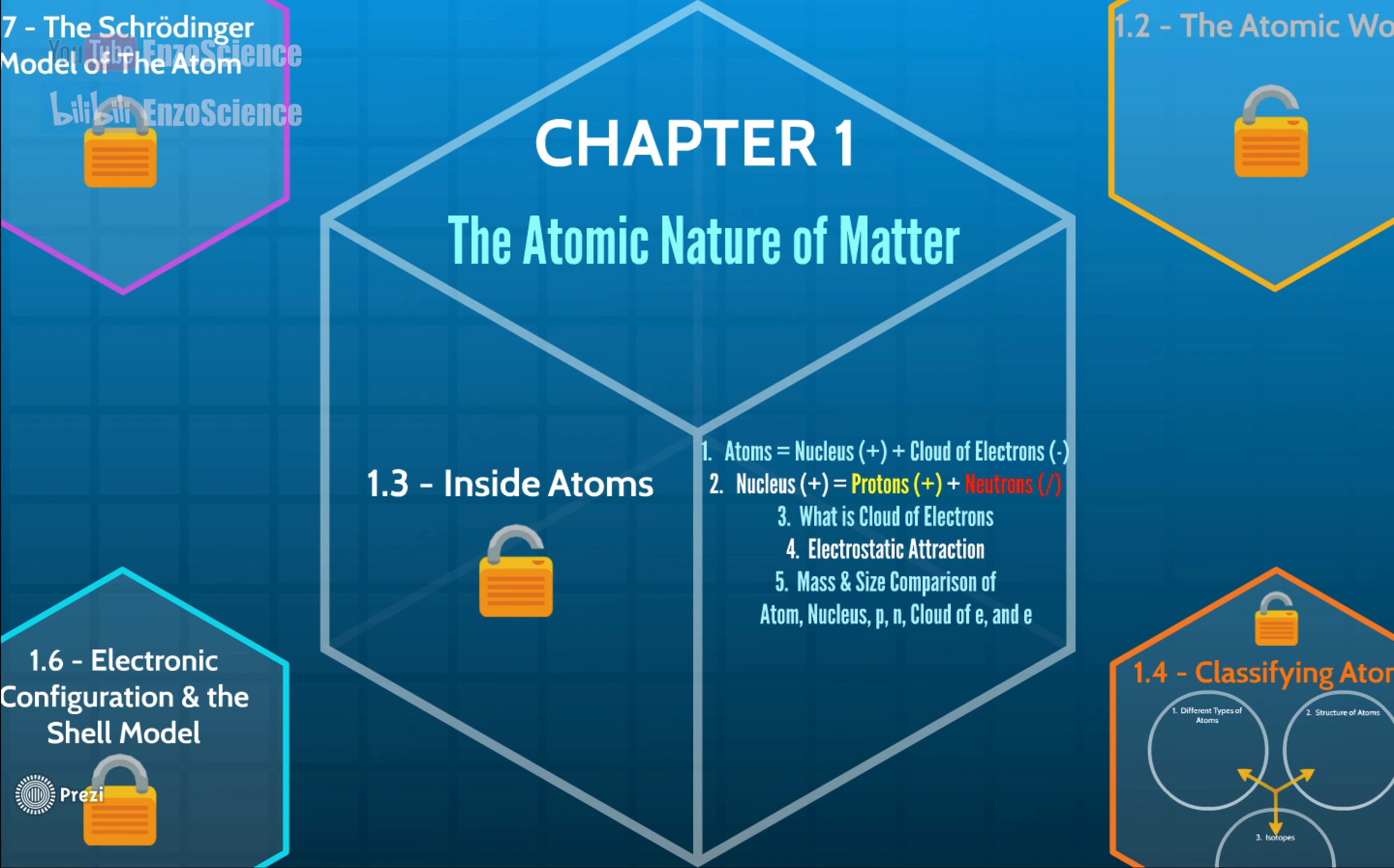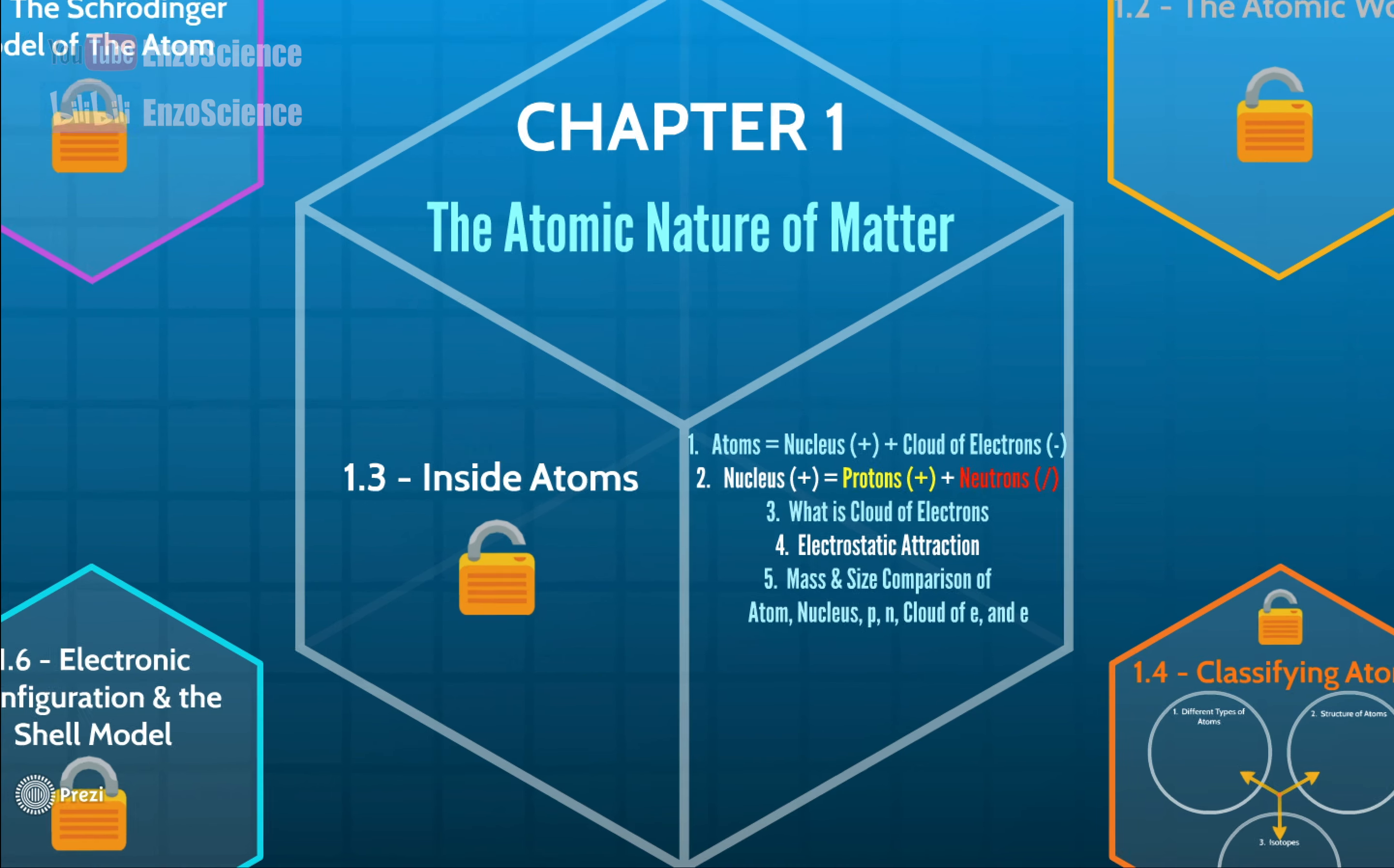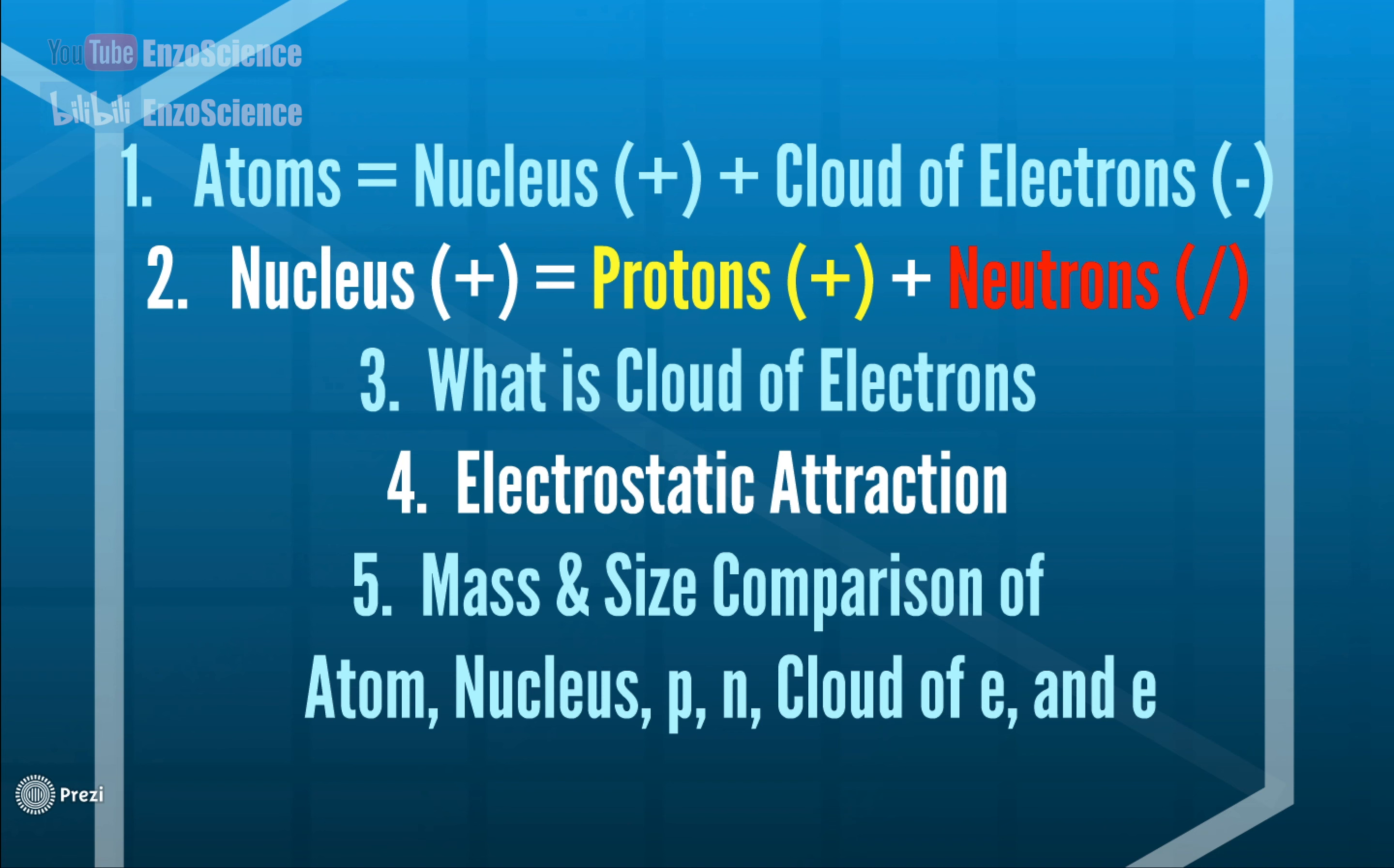Before we start today's topic, let's have a quick review for last lecture. Firstly, we know atoms consist of nucleus which carries positive charges and cloud of electrons which are negatively charged. And nucleus can be further divided into protons which are positively charged and neutrons which are electrically neutral. Cloud of electrons is a model which is used to represent possibility of electrons appearance everywhere within an atom.